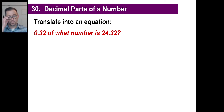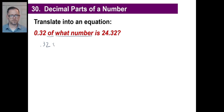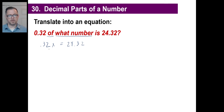There are decimals here, but we do the same thing — just go left to right. '0.32 of what number is 24.32?' Point-three-two of means to multiply by what number — we don't know, we call it X — so 0.32X = 24.32. To solve, just divide both sides by 0.32 and do the long division.